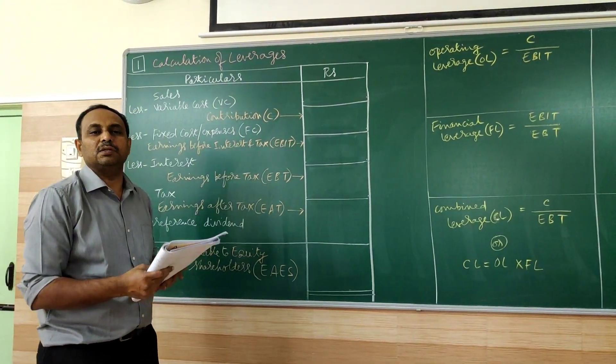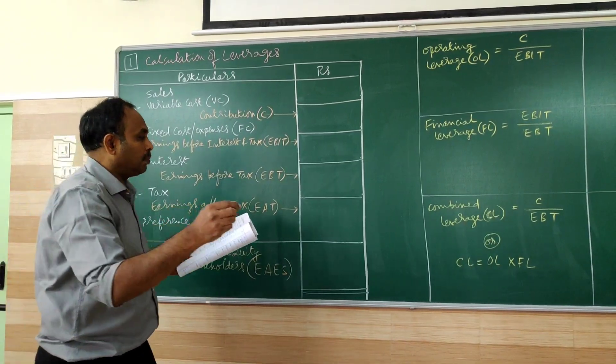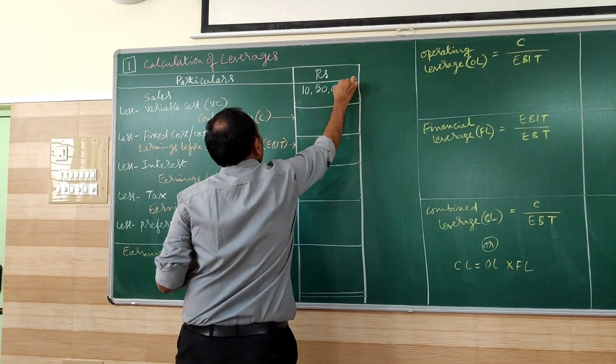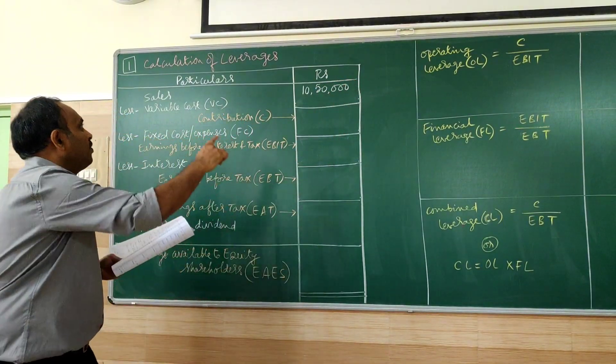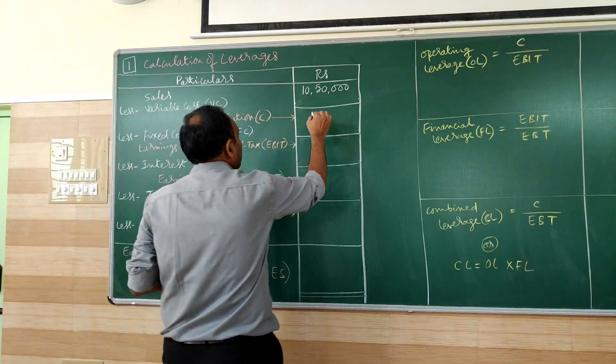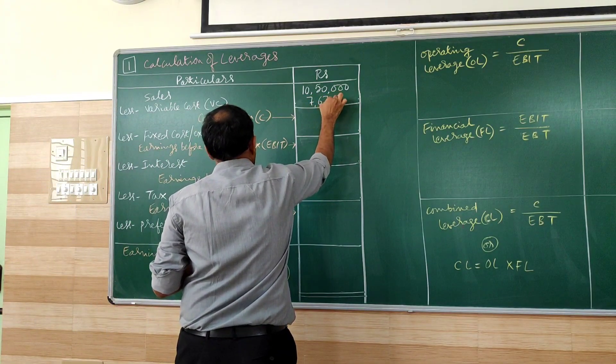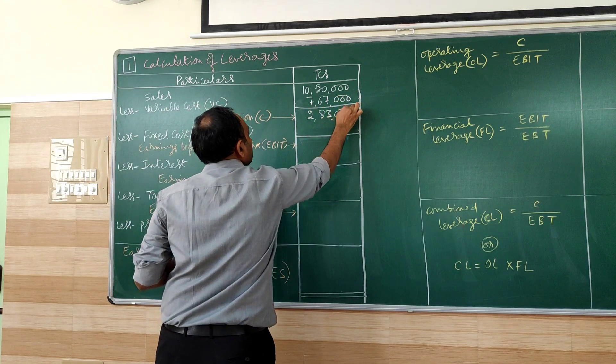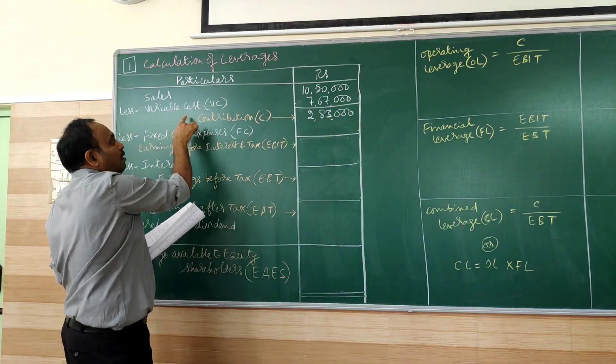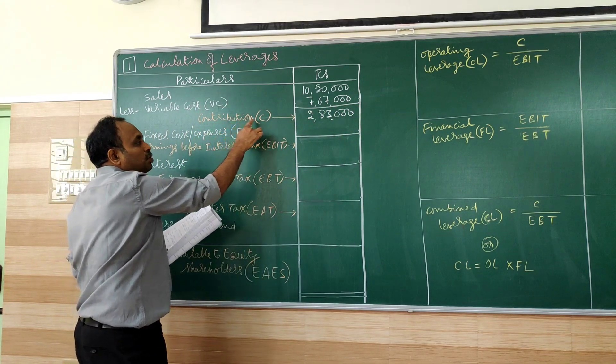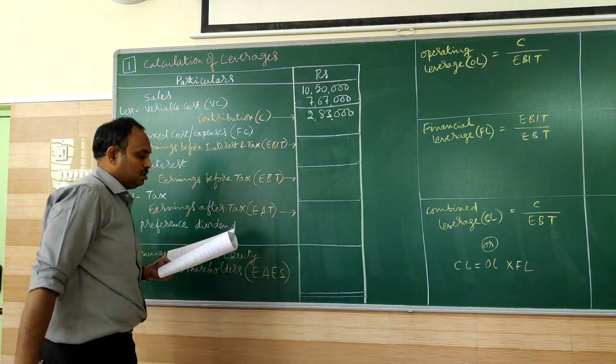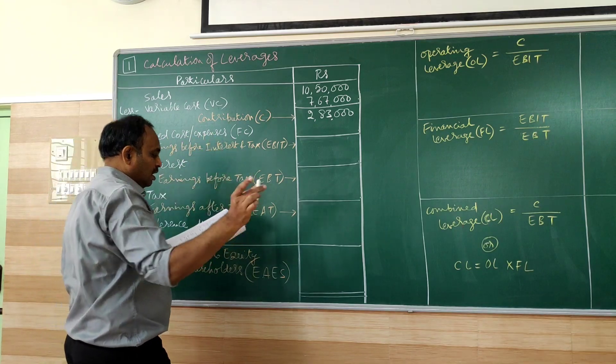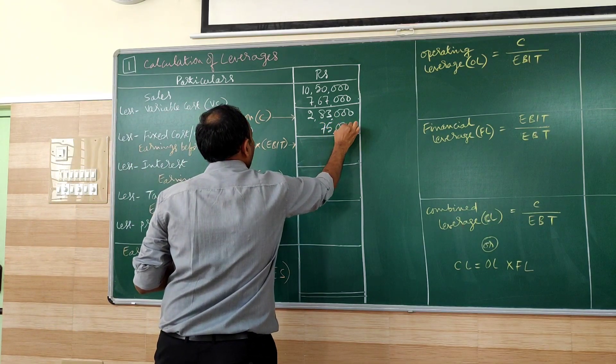So I will go on filling the information. What is there in the problem given. We have sales as 10,50,000. Next we need variable cost, given as 7,67,000. The result, the contribution after deducting the variable cost is 2,83,000.